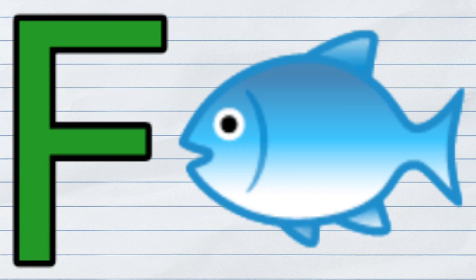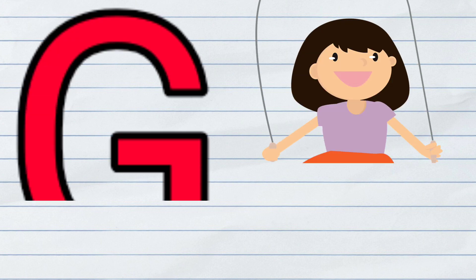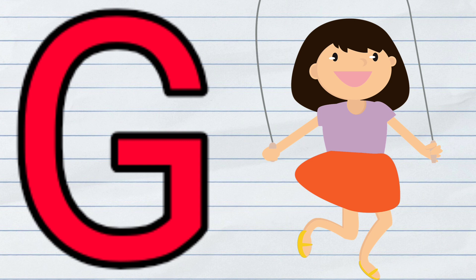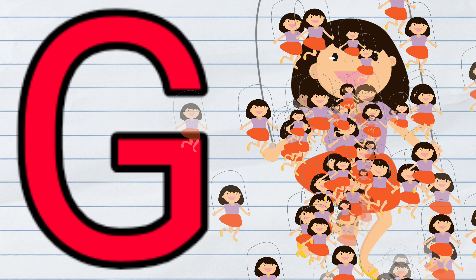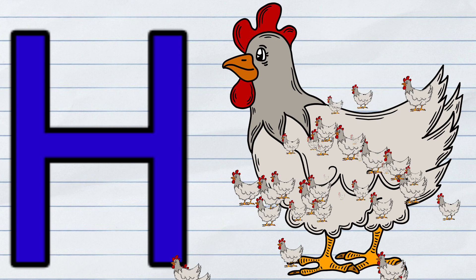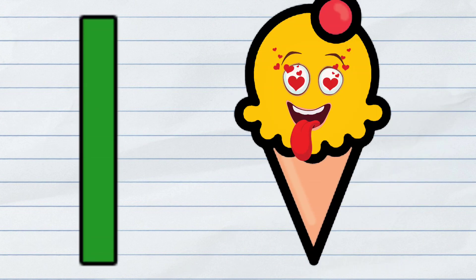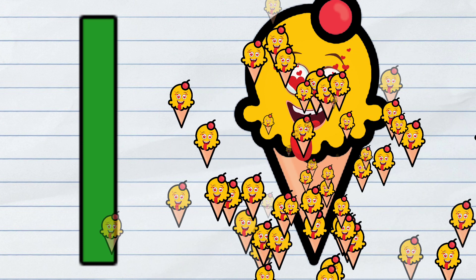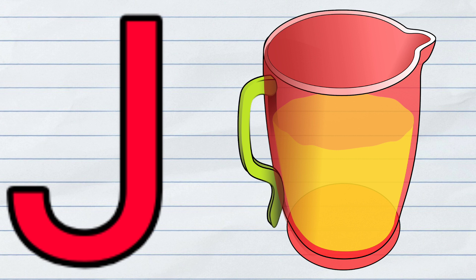F. F for cheese. G. G for girl. H. H for hen. I. I for ice cream. J. J for jug.